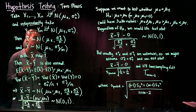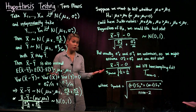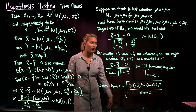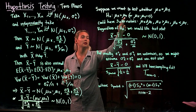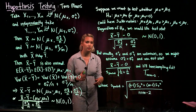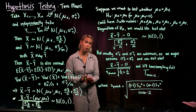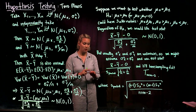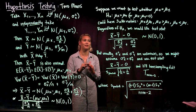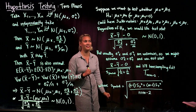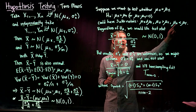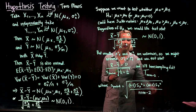Suppose we want to test whether the two means are equal — that is, is mu x equal to mu y. Our null hypothesis is that the two means are equal, or equivalently mu x minus mu y equals zero. We also need to specify an alternative: the two means are not equal, mu x is greater than mu y, or mu x is less than mu y. We choose one of these as our alternative hypothesis.